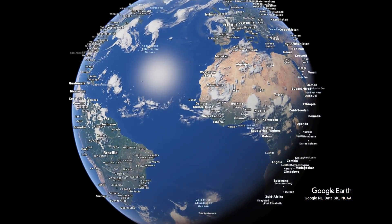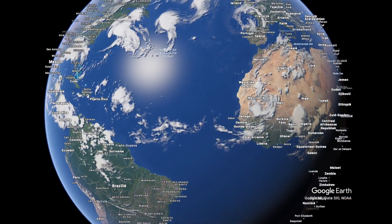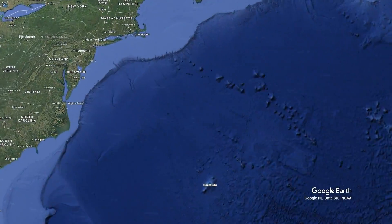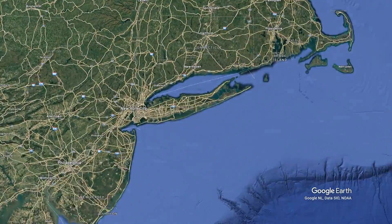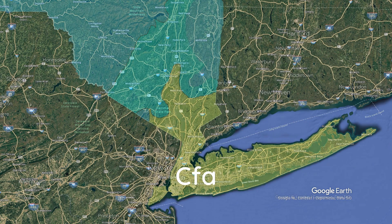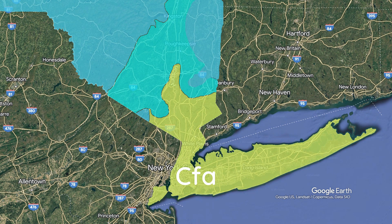New York City — in this video not to be mistaken with the state of New York — has a CFA subtropical climate according to the Köppen climate classification. But if the city were not there, the climate could also fall within the humid continental temperature range. According to Köppen, that's DFA.